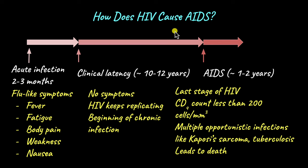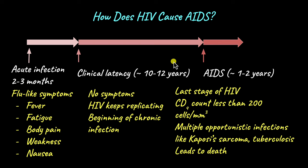So this is how HIV causes AIDS. It doesn't start off with AIDS immediately. There is an acute infection period where the patient experiences flu-like symptoms, then a clinical latency period lasting around 10 to 12 years, during which the immune system slowly but steadily degrades, leading to opportunistic infections ravaging the body, which eventually leads to AIDS and death. We will continue this series by talking more about how HIV is transmitted from one person to another and how it can be prevented in another video.